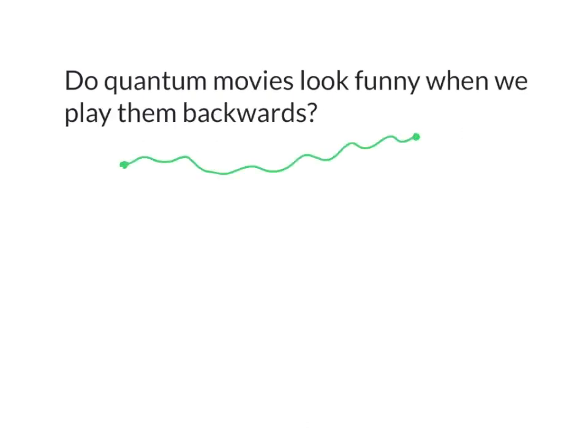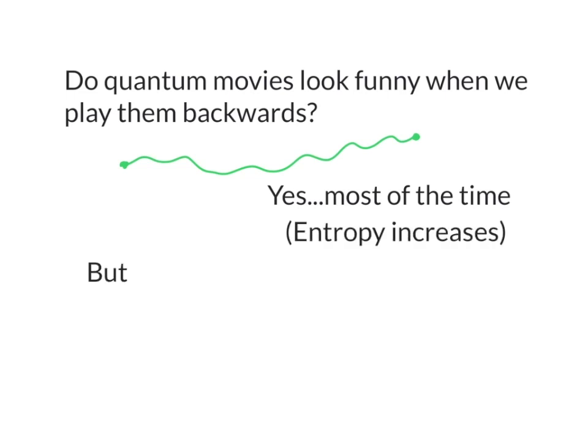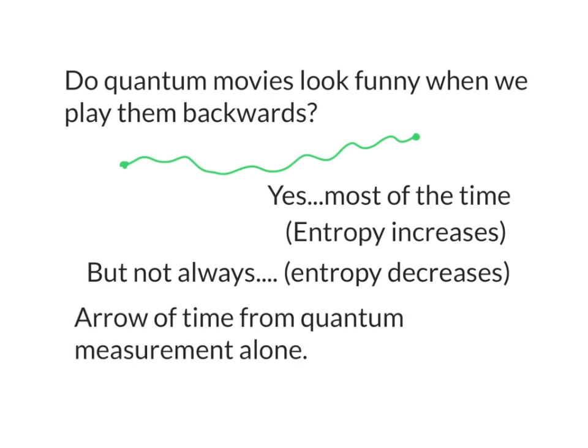So do quantum movies look funny when we play them backwards? Yes, most of the time. This means that entropy generally increases but not always. Sometimes we see that the quantum movies look funny when we play them forwards. In this case entropy decreases. So at the microscopic level we see how the arrow of time emerges from quantum measurement alone.